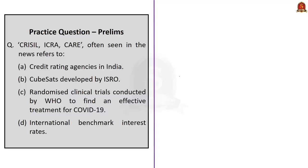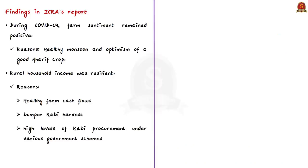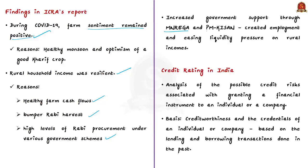The next news article is based on a report released by the credit rating agency ICRA. The report says that even during the COVID-19 pandemic, farm sentiments remained positive due to a healthy monsoon and optimism of a good kharif crop. Rural household income was resilient due to healthy farm cash flows, a bumper rabi harvest, and high levels of rabi procurements under various government schemes. Financial resilience indicates the ability to withstand life events that impact one's income or assets. Let us discuss briefly about credit rating and then about ICRA.